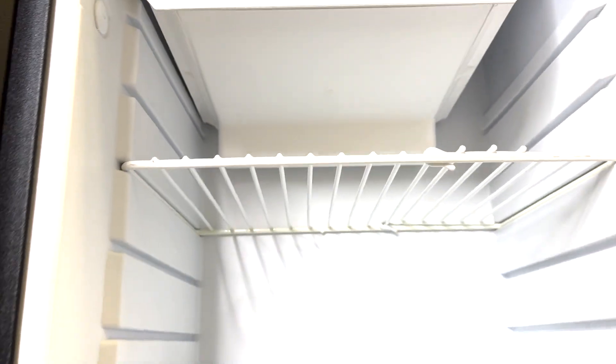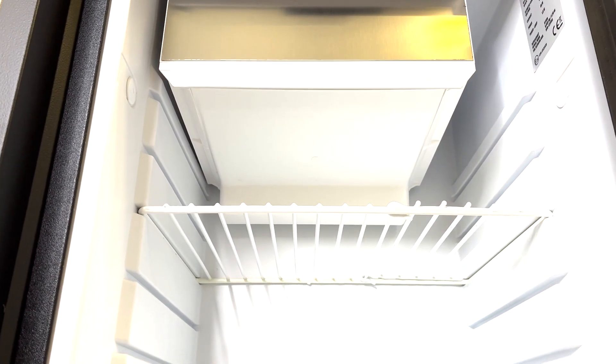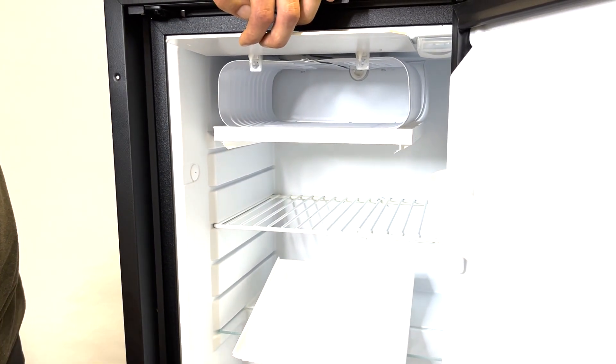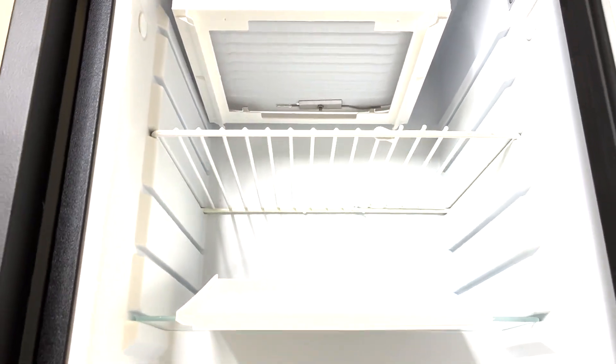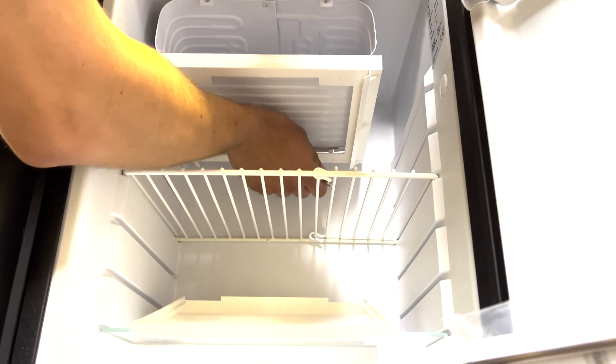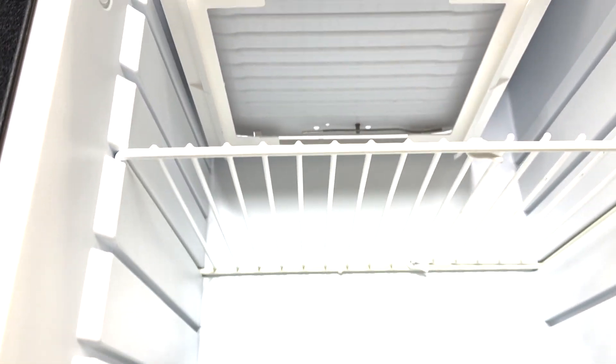The first job is to remove the drip tray from inside the fridge. Locate the thermostat clamp underneath the icebox. Using a 6mm spanner and Phillips screwdriver, remove the thermostat clamp.